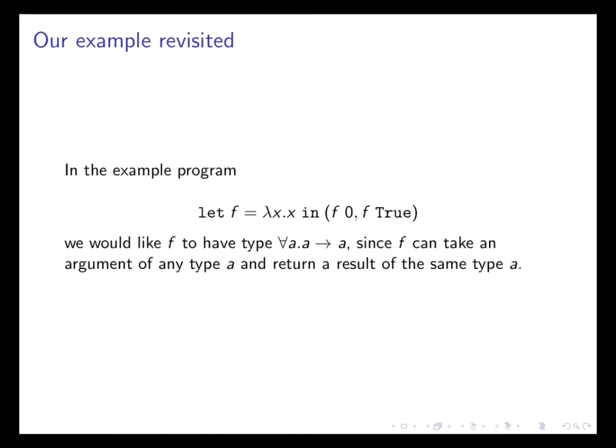So now let's return to the example that we looked at towards the end of the previous section of our podcast. The let example, we define a function F to be lambda X dot X, the identity function in F 0 comma F true.